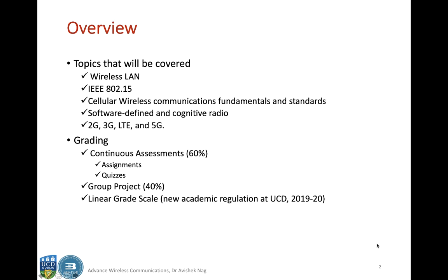IEEE is the abbreviation for the Institute of Electronics and Electrical Engineers — a global organization of electronic and electrical engineers like you and me. They regulate these standards. Whenever there are new technologies, they come up with rules to define the path of technology progression. They have several standards; wireless LAN has a standard which is IEEE 802.11, and IEEE 802.15 is the wireless personal area network standard.